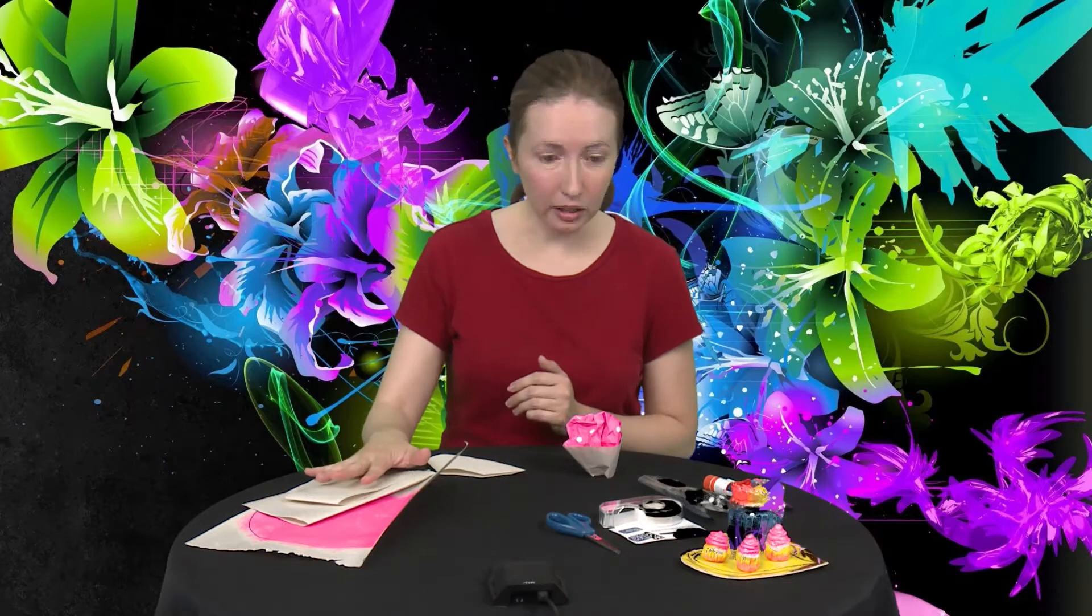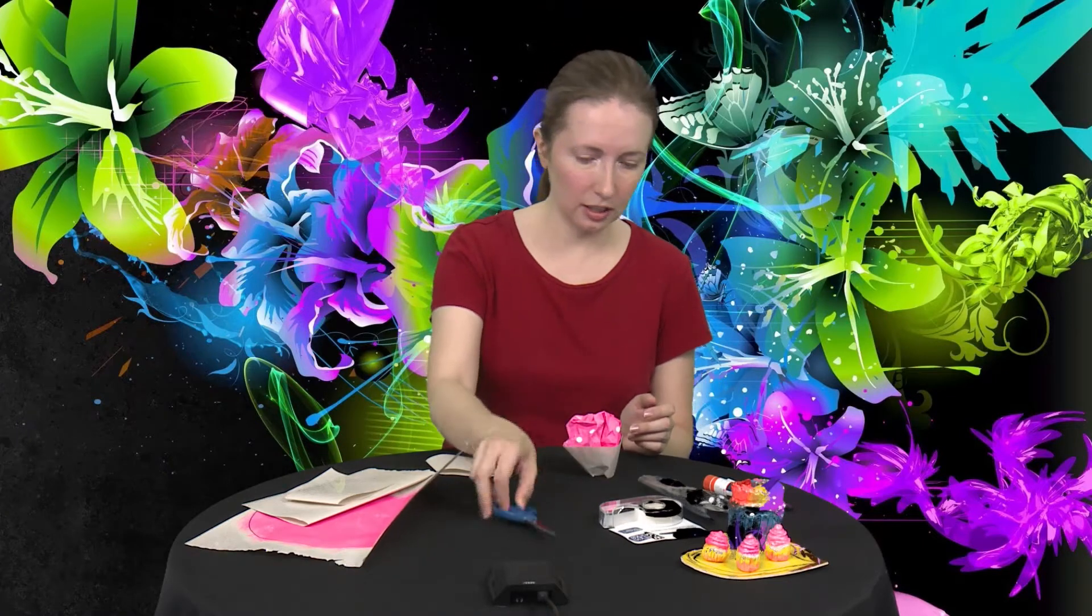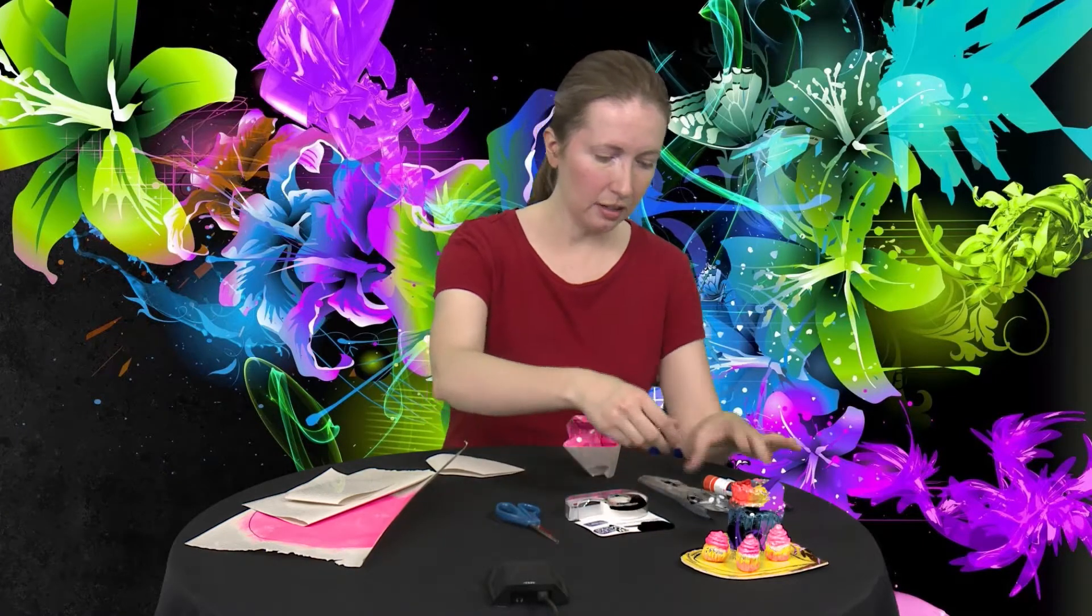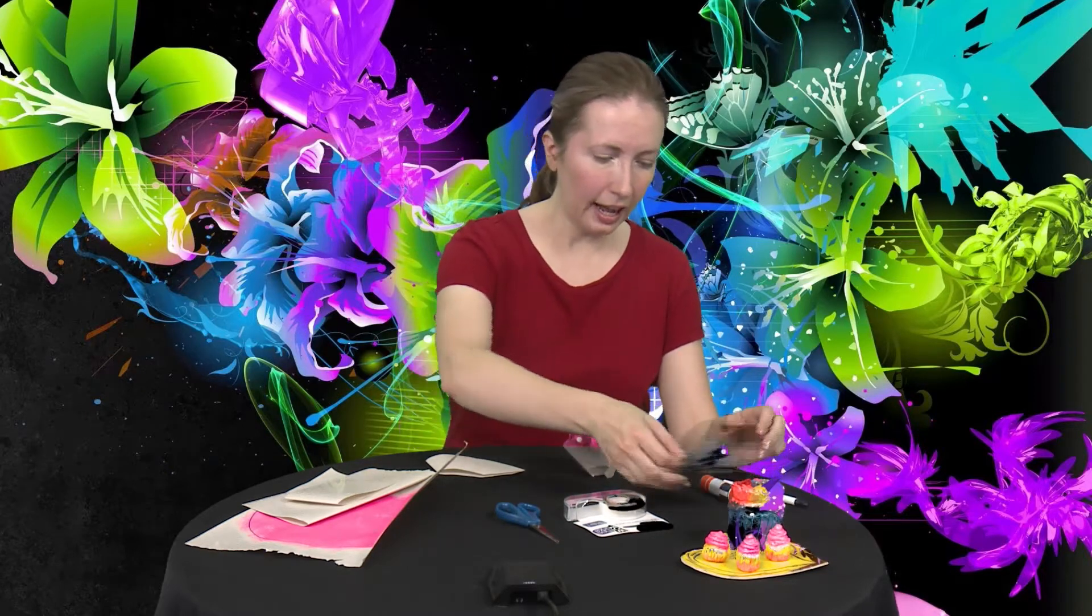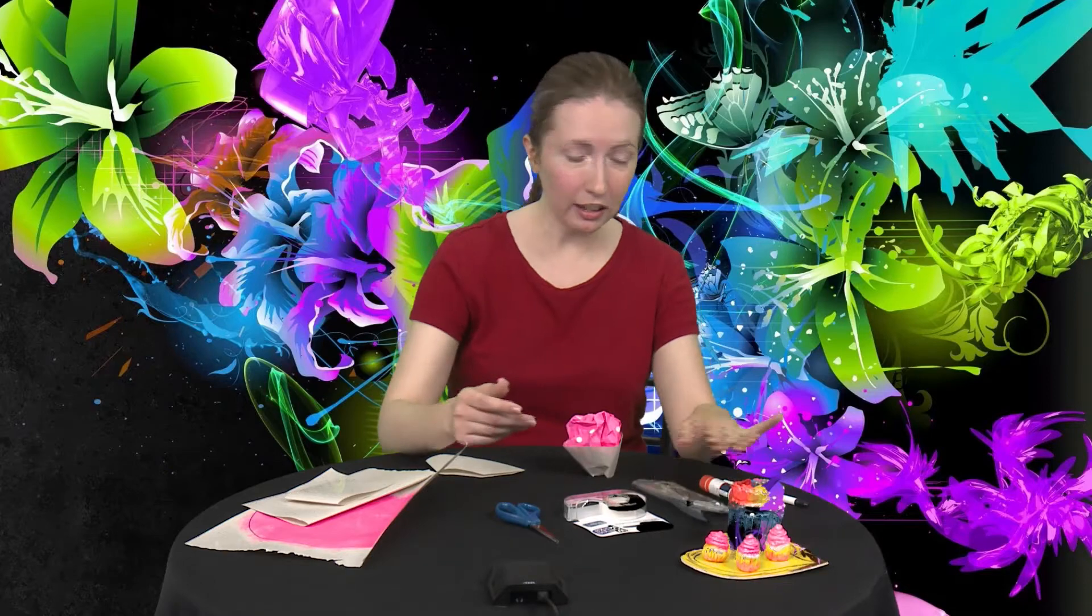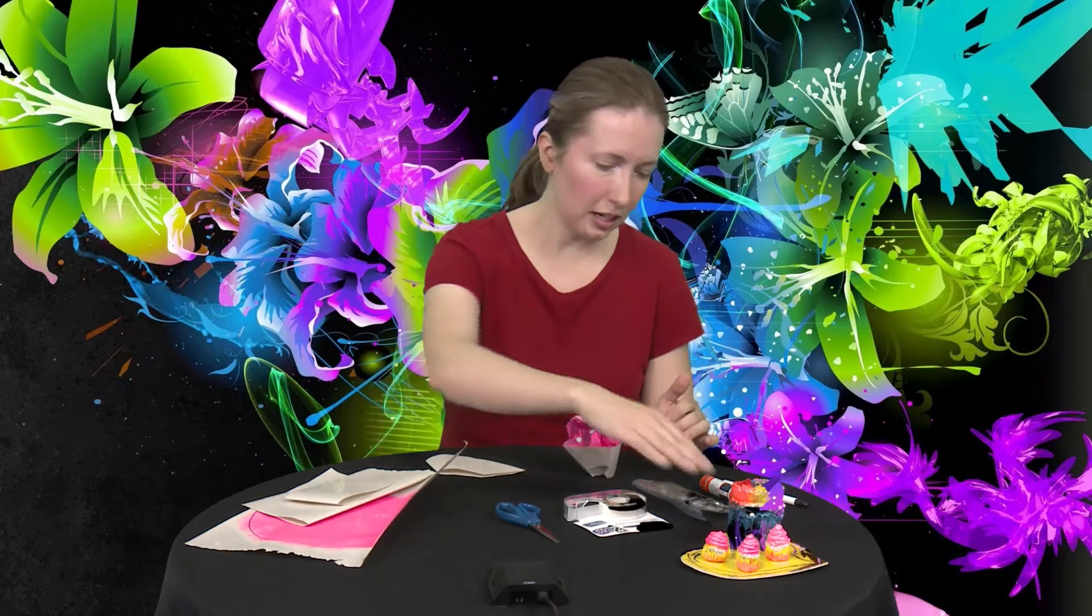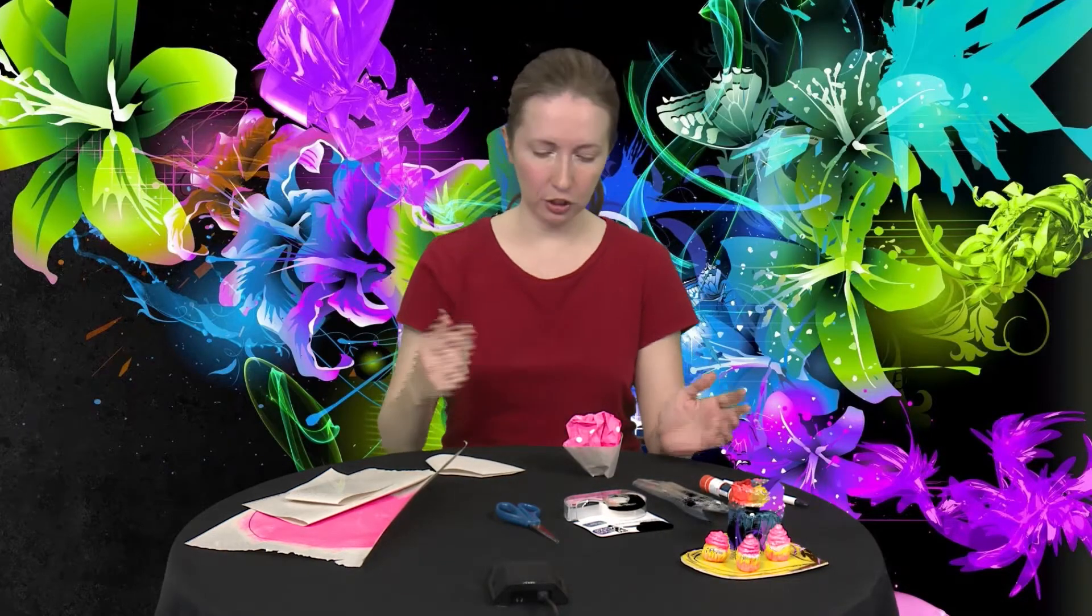You're going to want some paper. You might want to have some kind of colored paper, or you could always color the paper yourself. You're going to need some scissors, tape, some glue, and probably a pencil or pen. And if you want to add little confetti or sprinkles, maybe just something that you could make with a little hole puncher.